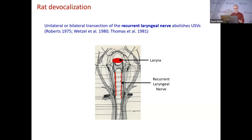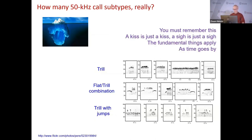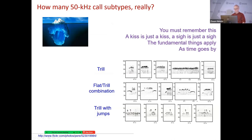One advantage of our fine-grained approach is we can back-translate — if we report 14 call subtypes, we can calculate and convert into Marcus's system, for example. But the reverse is not true. Of course, we don't really know what these subtypes mean to rats. Do they recognize 14 subtypes? I somehow doubt that. Does a rat see these as all the same category, or do they have different meanings? Does a single given call mean different things in different situations? We don't know much about that either. It's a matter of personal choice what kind of system you use to classify calls.